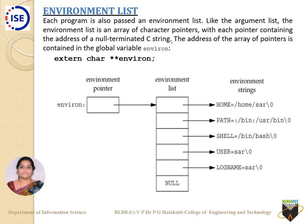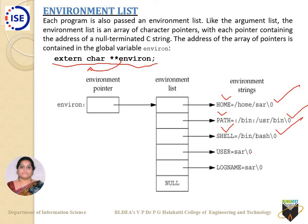Regarding the environment list: there is a global variable called environ, declared with the extern qualifier, which is a pointer to the environment list. Each entry in the environment list holds an environment variable assigned a value in the form 'variable=value', terminated by a null character. Common environment variables include HOME, PATH, SHELL, USER, and LOGNAME — all pointed to by the environment list.